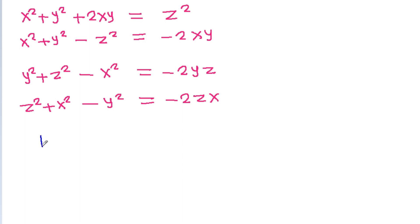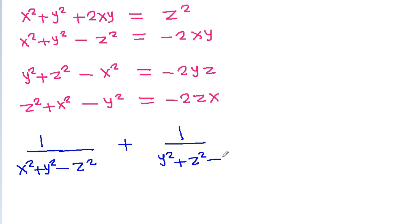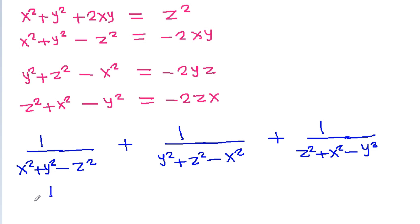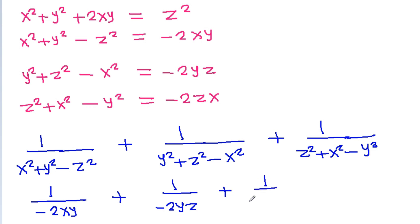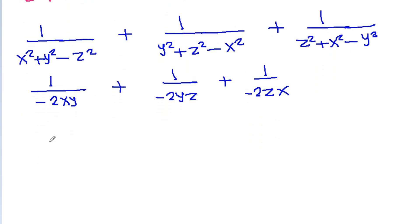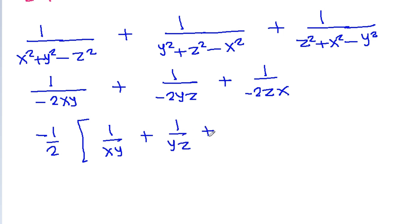We have to find the value of 1 by x square plus y square minus z square, plus 1 by y square plus z square minus x square, plus 1 by z square plus x square minus y square. Substituting, this becomes 1 by minus 2xy, plus 1 by minus 2yz, plus 1 by minus 2zx. Taking out minus 1 by 2, we get 1 by xy plus 1 by yz plus 1 by zx.